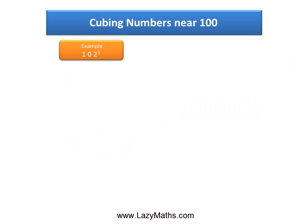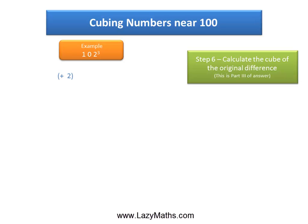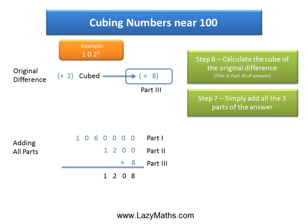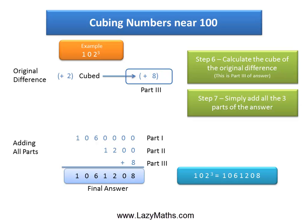Finally, let's look at how to get part 3 of the answer. We go back to the original difference, plus 2, and we cube this, which gives us positive 8. Positive 8 becomes part 3 of the answer. Take all the parts and simply add all of them together because they are all positive. So the final answer is 1,061,208, and we conclude that 102 cubed equals 1,061,208.